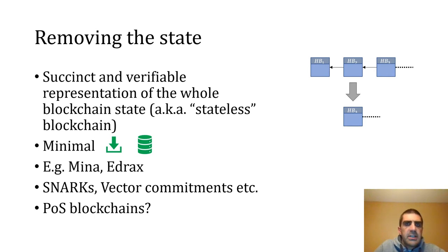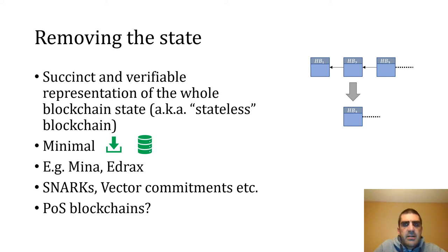The so-called stateless blockchain approach is naturally very light client-friendly, because we forget about downloading and verifying all the blockchain history. Systems following this approach include Mina, previously called CODA, which uses SNARKs in a recursive fashion, and the EDRAX cryptocurrency, which has a commitment to the state based on either vector commitments or sparse Merkle trees depending on the account model — UTXO or account-based. The problem here is again the consensus evolution; for example, Mina utilizes a special type of proof-of-stake to accommodate this.